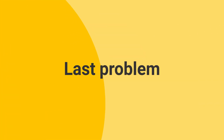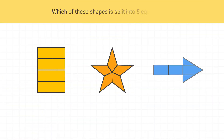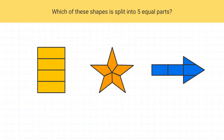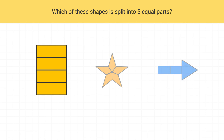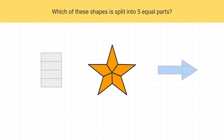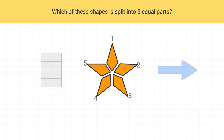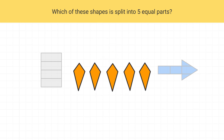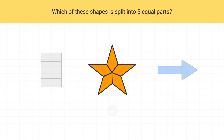Now here is your last problem for this video. Which of these shapes is split into five equal parts? The first shape is split into only one, two, three, four parts, so it can't be this one. This second shape is split into five parts, and all of them do appear to be the same size. So we can say that this shape is split into five equal parts.